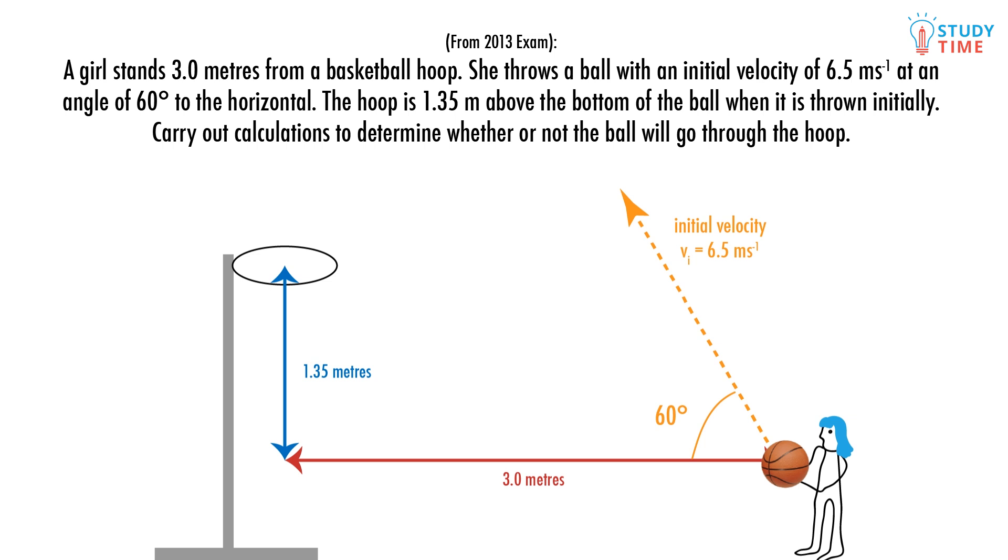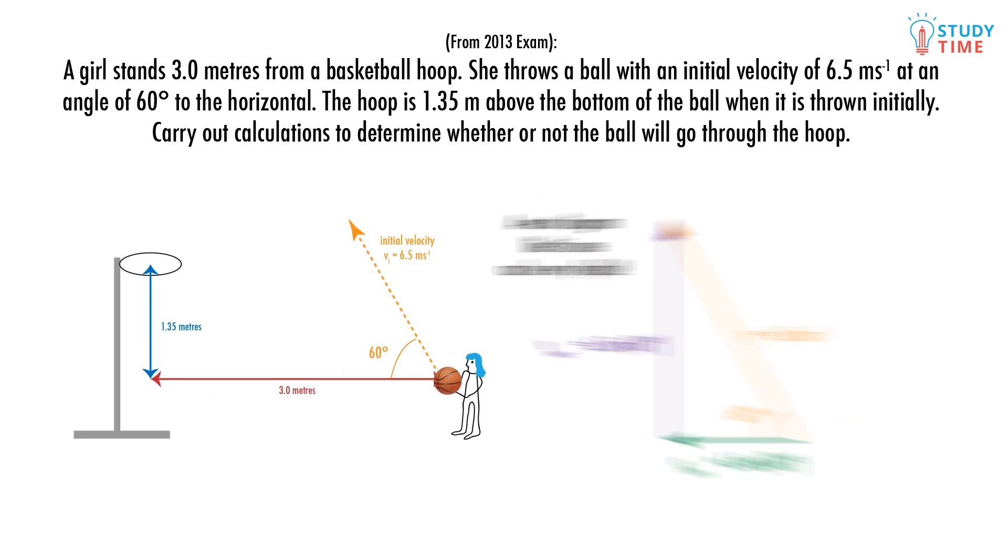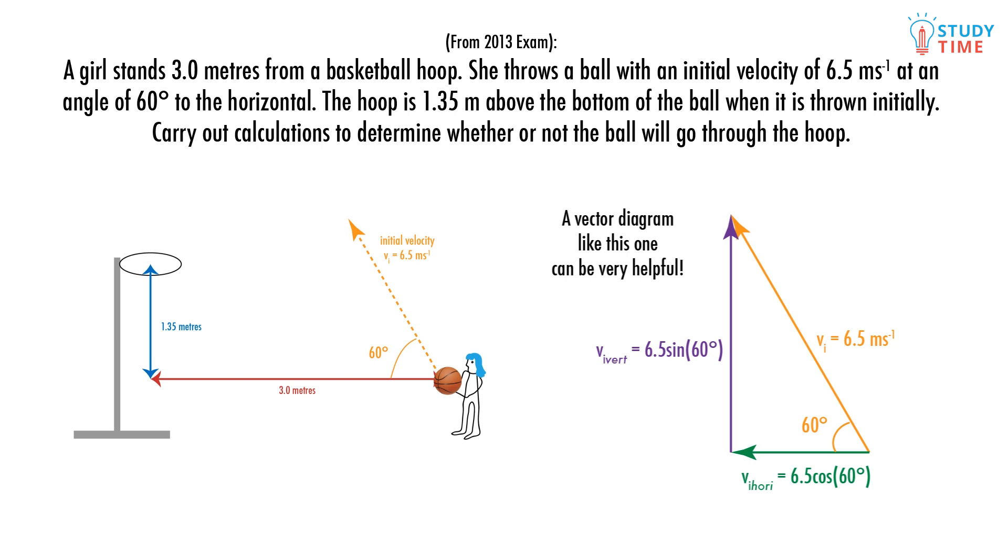Begin your answer by calculating the horizontal and vertical components of the initial velocity of the ball. First we use trigonometry to figure out these components. The horizontal component is equal to 6.5 times the cosine of 60 degrees and the vertical component will be 6.5 meters per second times the sine of 60 degrees.